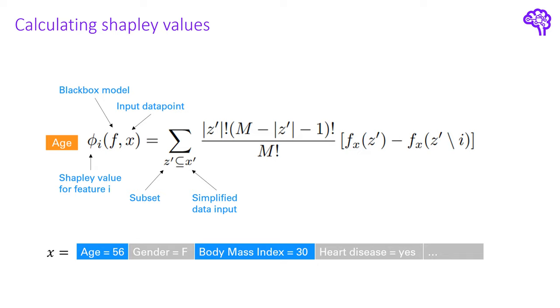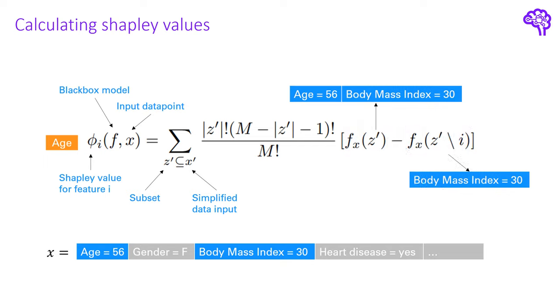And now the most important step. We get the black box model output for this subset with and without the feature we are interested in. So in our example it's age. The difference in those two tells us how age contributed to the prediction in this subset. For example the black box model output with age would be 70 percent stroke and without age only 10 percent. That means age contributes 60 percent towards stroke in this subset. That's also called the marginal value.